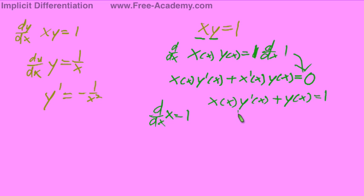Now what we're going to do is separate for y prime of x because that's what we're really looking for anyways. Sorry, this is still 0. We'll subtract y of x from both sides, and that will give us x of x times y prime of x equals negative y of x. And then we'll divide both sides by x of x. So y prime of x equals y of x over x of x.